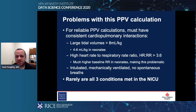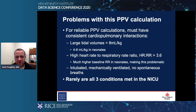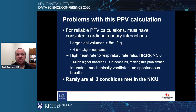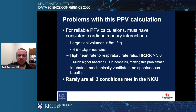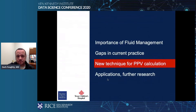There are problems with this calculation for kids in the NICU. For it to be reliable, you need consistent cardiopulmonary interactions: large tidal volumes around 8 mL/kg, whereas neonates typically use 4–6 mL/kg. You also need a heart rate to respiratory rate ratio greater than 3.6, which is problematic because neonates breathe faster and rarely reach that ratio. Finally, you need to be intubated and mechanically ventilated with no spontaneous breaths — rarely met in the NICU, causing noise in the signal.